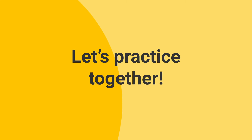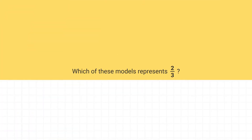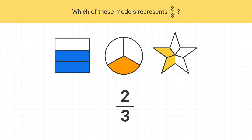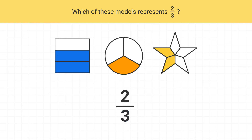Now let's do some of these together. Let's find out which of these models represents 2 thirds. The first thing I'm going to look at is the denominator, which is a 3. This means that our model will have a total of 3 pieces. We can see that the first model has 3 pieces, and this next model also has 3 pieces.